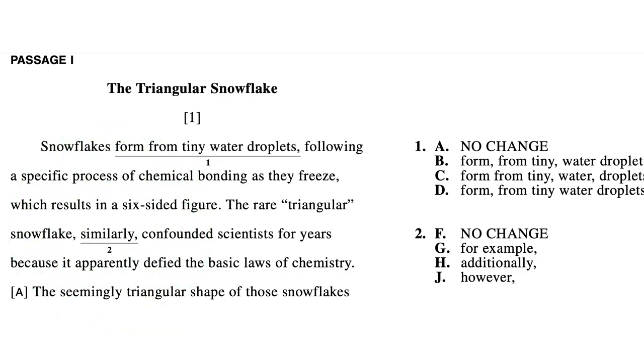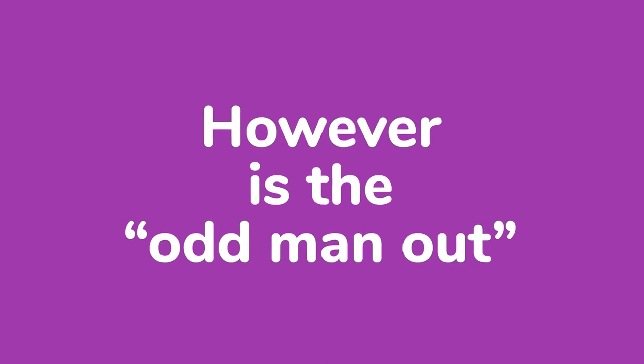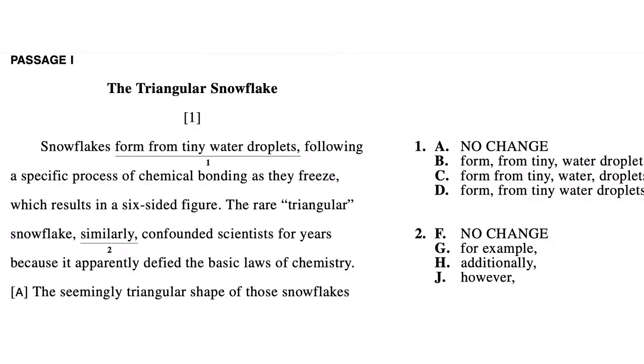I'm actually going to answer this question without even reading the sentence at all. "Similarly" — that's affirmative. "For example" — affirmative. "Additionally" — affirmative. "However" — contradictory. So my guess is the answer is J. And let's check — sure enough, the answer is J. Tricky transition words, and I did it without even reading the sentence.